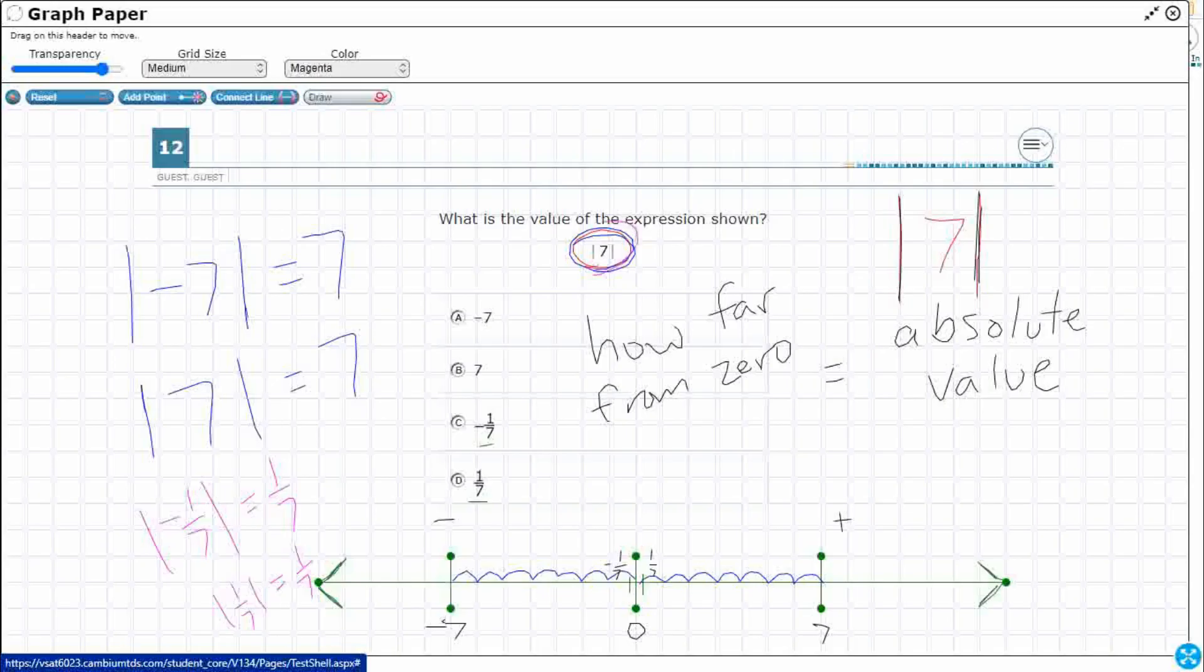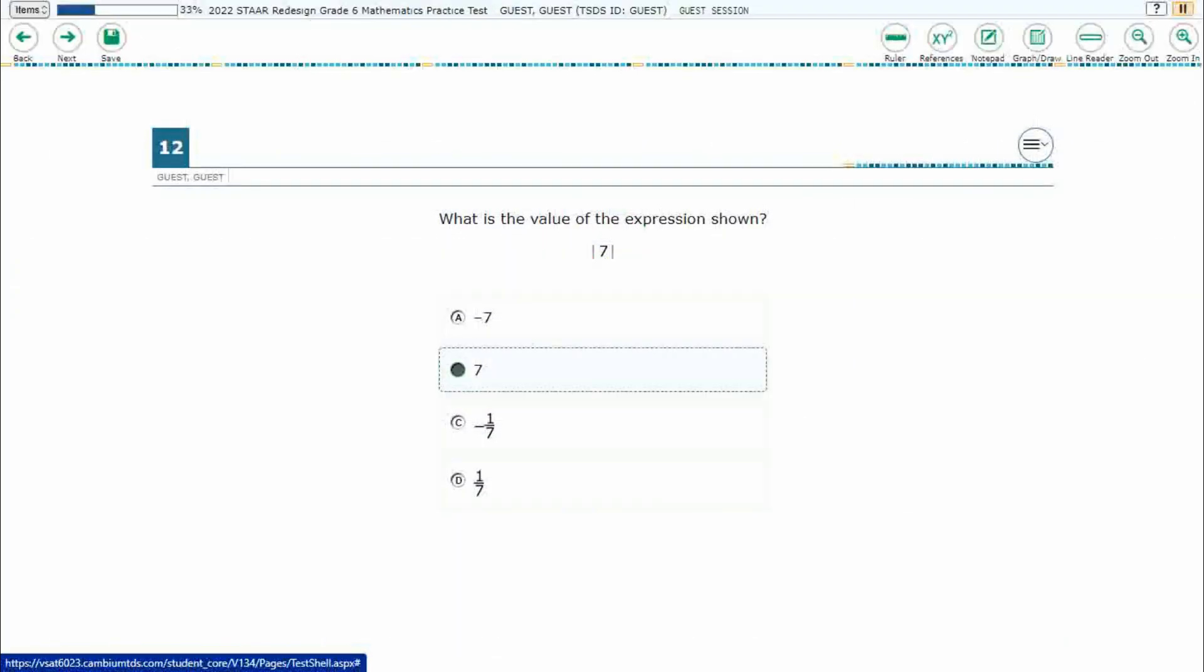So what is the value of this expression right here? Well, how far away is 7 from 0? Let's not overthink it. It's 7. So our answer here is B.